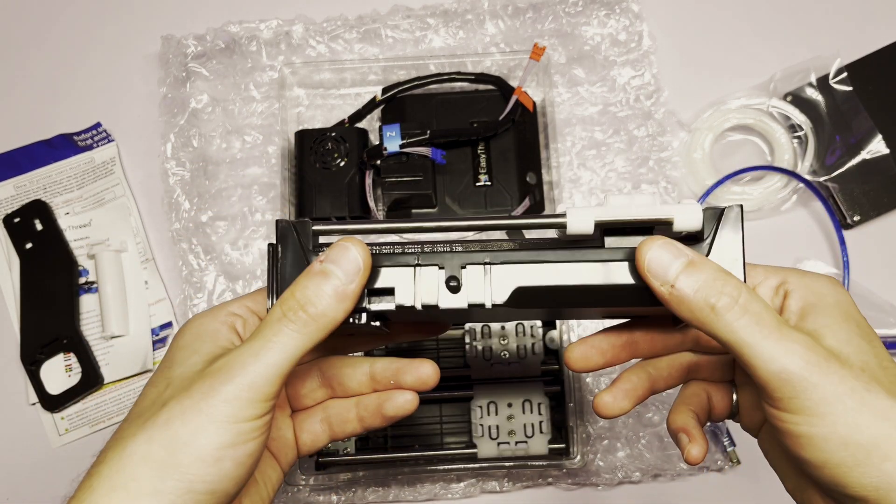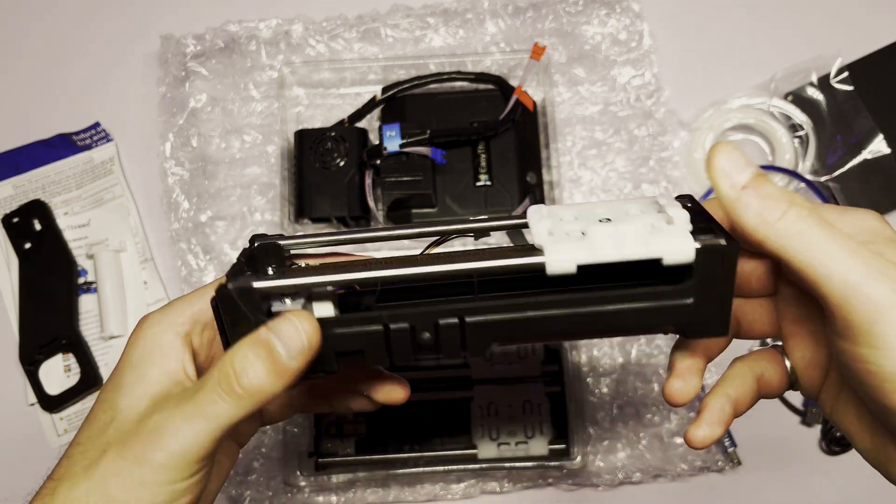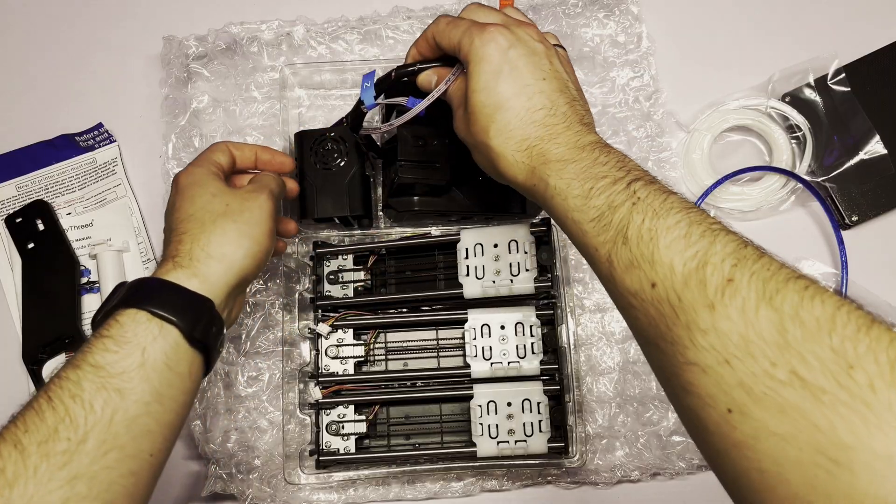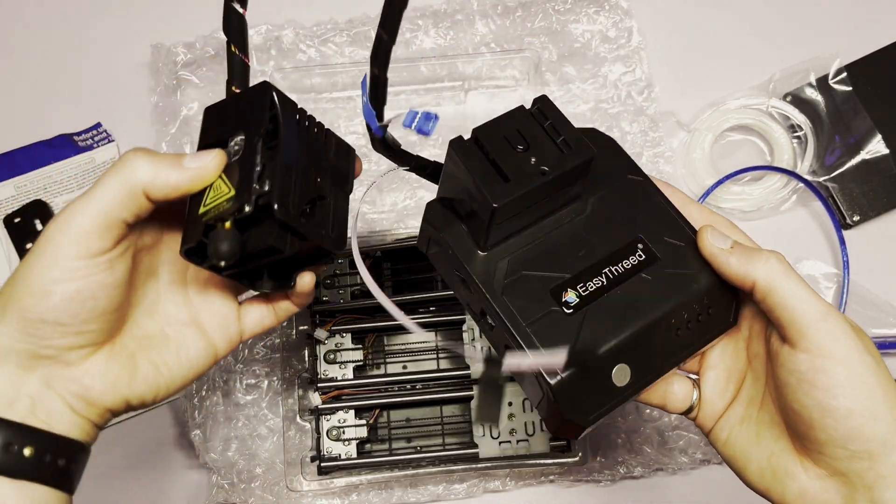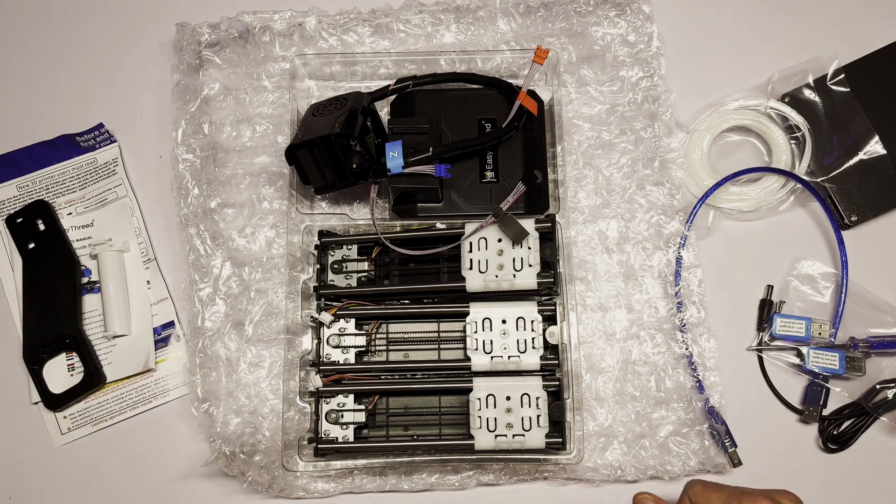But once again, it's $80 from Temu however you say it. And then we have the main body here and the extruder. Now I'm going to lay all this out and then we can look at the instructions and start building.